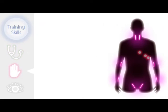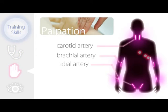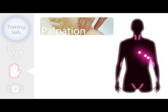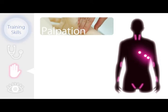The model also provides 8 areas of palpation, including the carotid artery, brachial artery, radial artery, femoral artery, right ventricular lifting, left ventricular heaving, left ventricular enlargement, and the abdominal respiration.